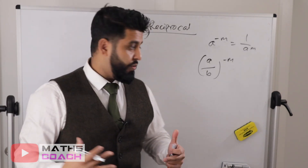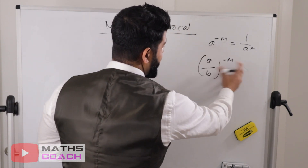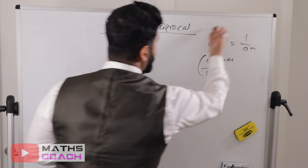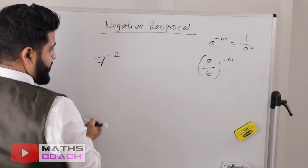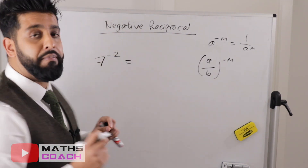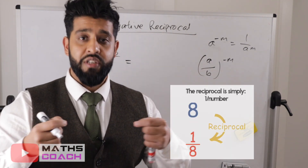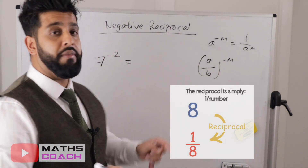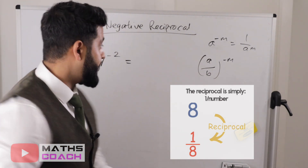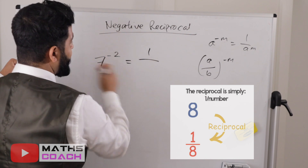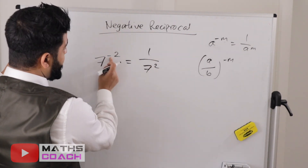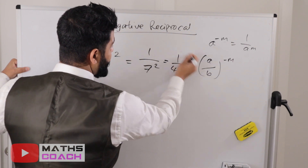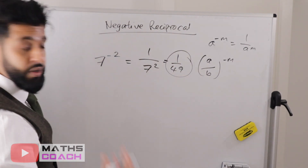Now let's look at negative indices and reciprocals. If we have 7 to the power of minus 2, whenever you see a negative in the power you use the reciprocal — it means one over that expression. So it becomes 1 over 7 squared. The negative is dealt with by writing one over, and 7 squared is 49, so you could write 1 over 49.